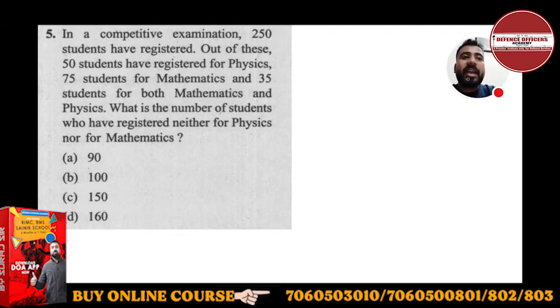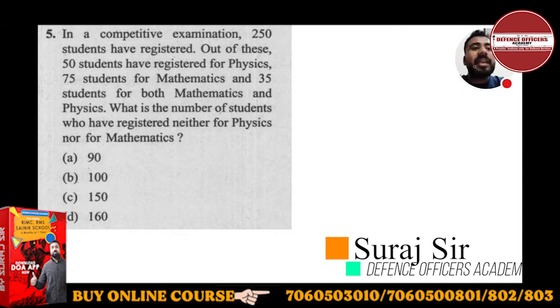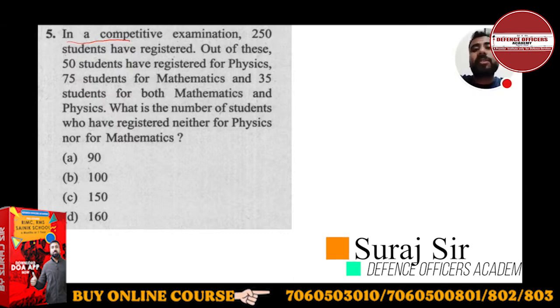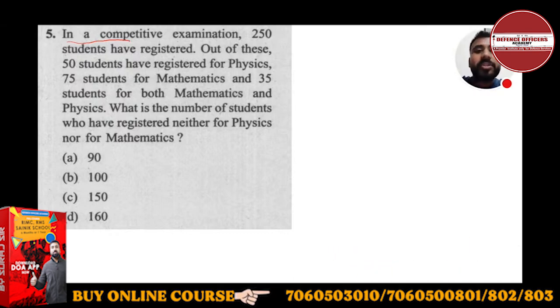We will see this question and how we are going to solve it. What is given in this question? In a competitive exam, these are all questions based on recent exams. 250 students have registered. Out of these, 50 students have registered for Physics, 75 students for Mathematics, and 35 students for both Maths and Physics. What is the number of students who have registered neither for Physics nor for Mathematics?